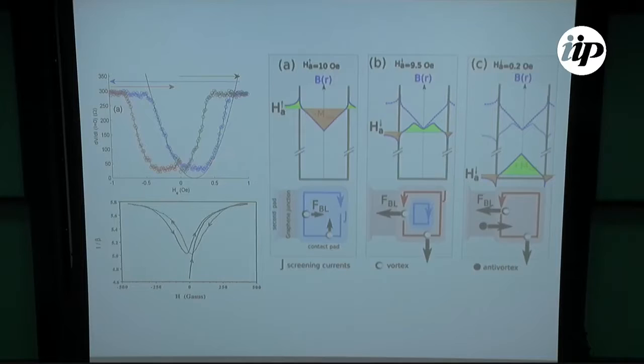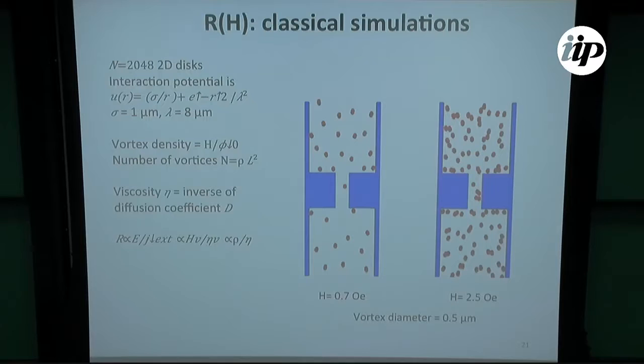Actually, to check this possibility, we have done a classical simulation. We have taken disks, and we have put a long-range interaction between the disks and a short-range interaction between the disks, and we have been claiming by analogy that a low density of disks means low magnetic field, and high density of disks means high magnetic field.